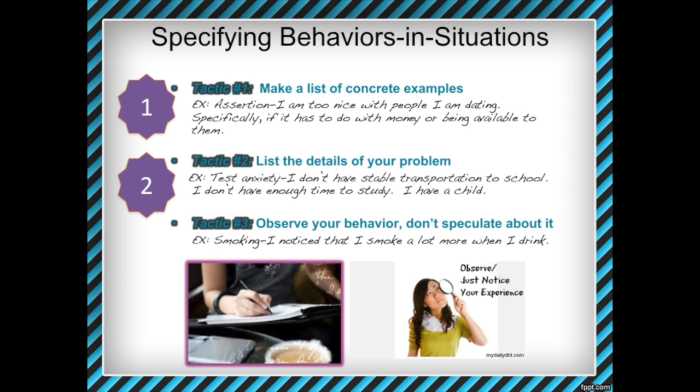Lecture activity two is to list the details of your problem. One way to do that is to look back at one of the examples from lecture activity one and think about all the things that led you to that problem. Or you could take a broader approach. I'd like you to give me five details — five things that keep you doing your bad behavior or prevent you from starting the good behavior you'd like to start.